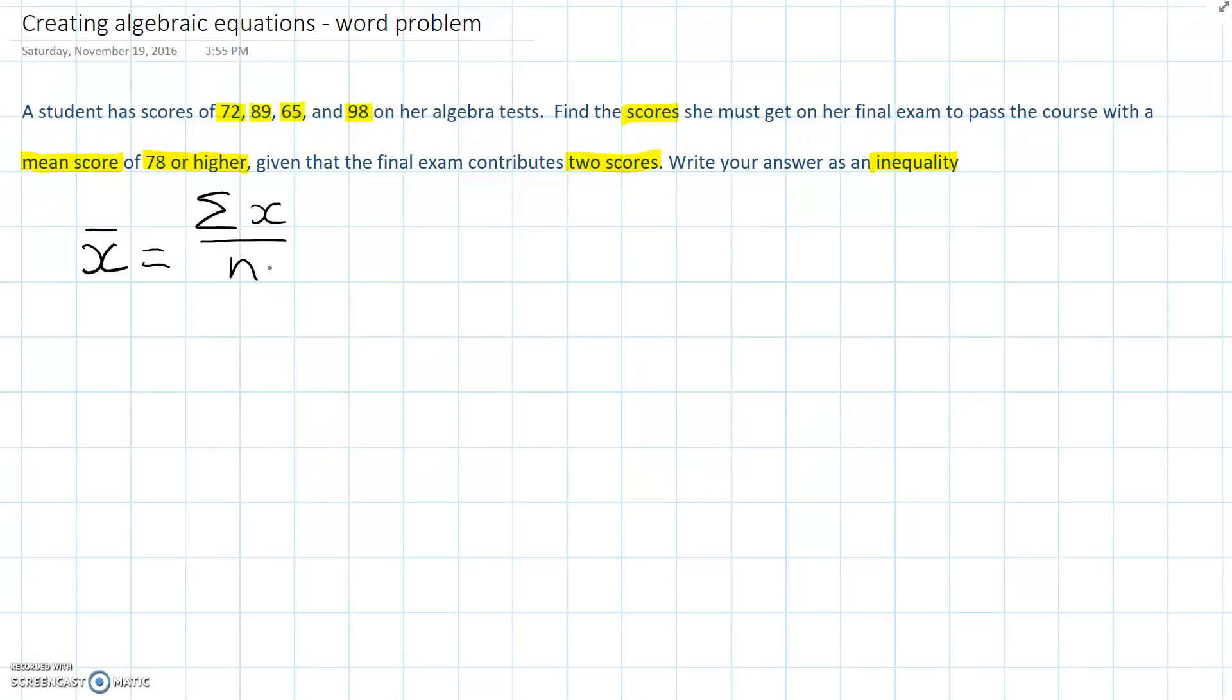Using the information that we've just highlighted, we know that the mean is 78 or higher. So, we can write the mean is 78 and this is as low as the mean can be. What we calculate for the mean should be greater than or equal to this lower bound of 78.